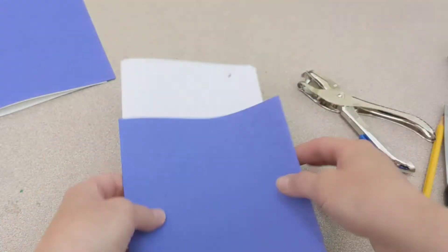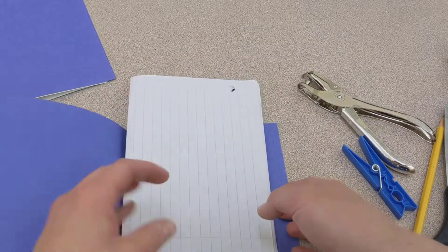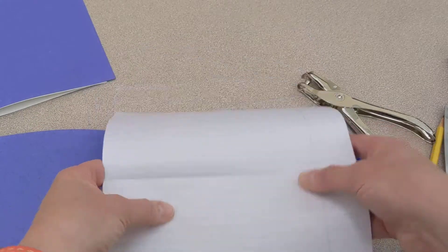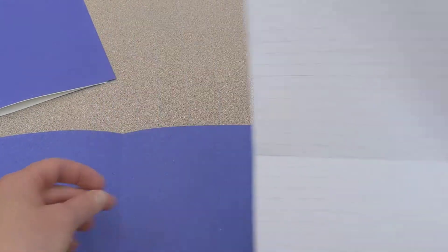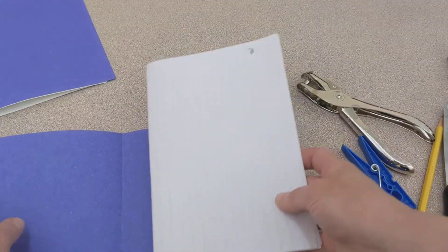Then you can put them inside your book. If I want my lines to go across this way, then I'm going to have to pay attention to the way that I fold, but for this book, I don't mind. I like the lines going up and down.